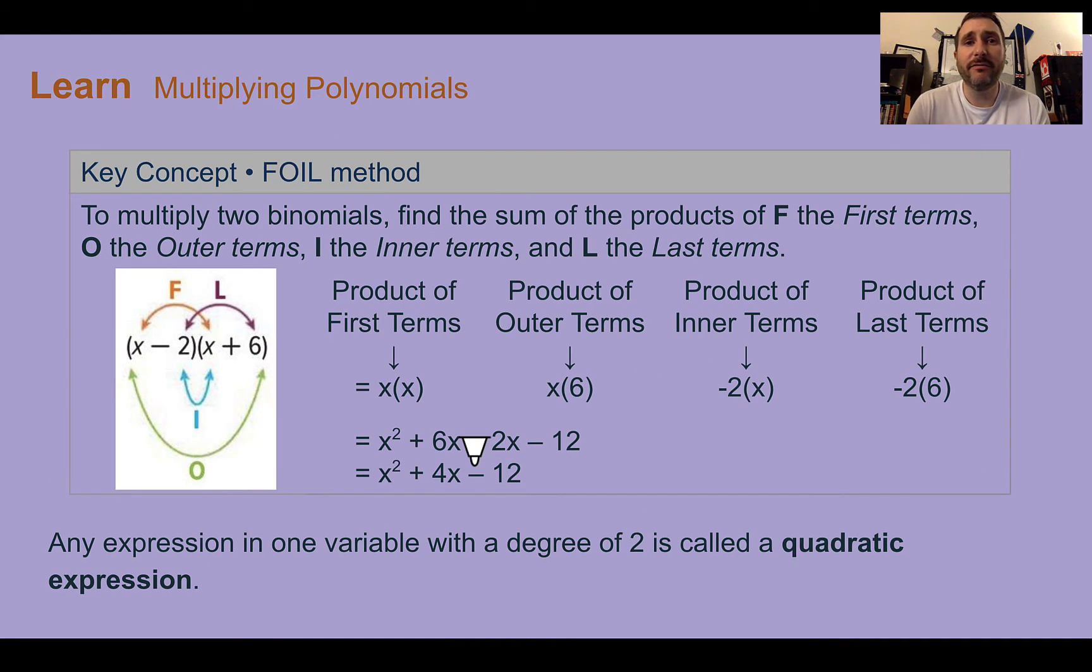So our key concept here is the FOIL method. This is a method that's going to help us keep track of when we're distributing what we need to multiply by and what we've already done. FOIL is an acronym that stands for First, Outer, Inner, and Last. That's telling you what to multiply by. So if you have two binomials and we are following FOIL, we're going to take the first two terms, x and x, and multiply them together. We would get x to the second power.